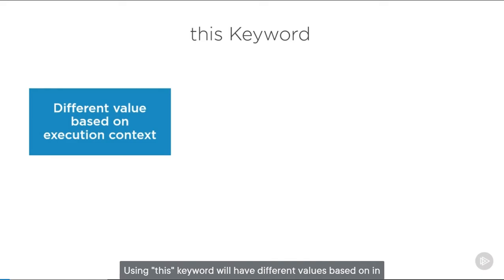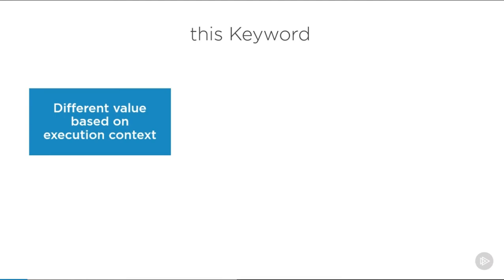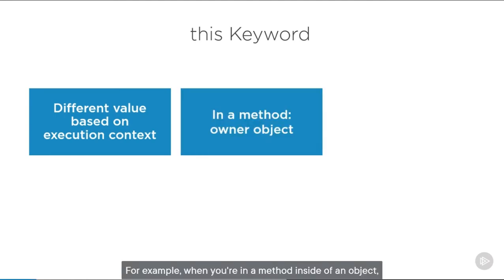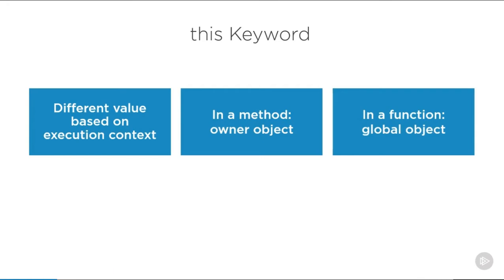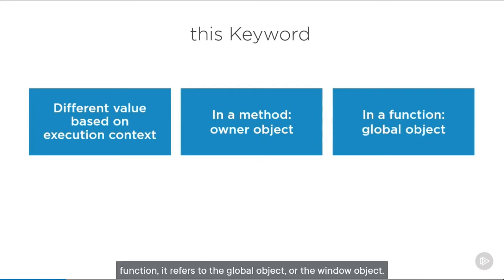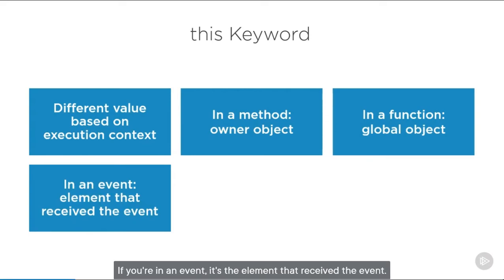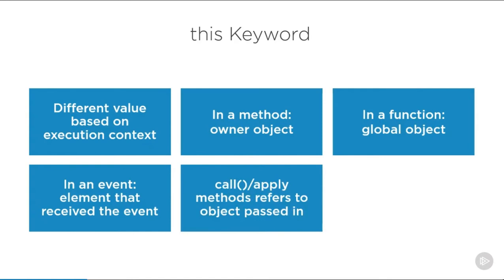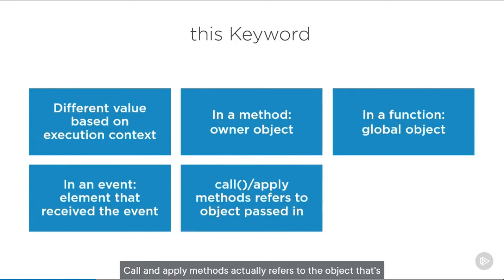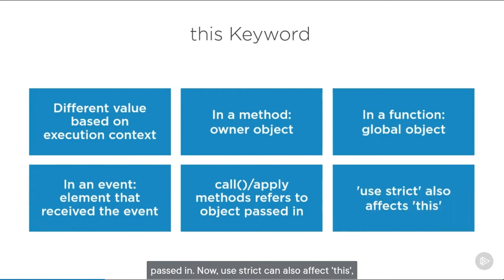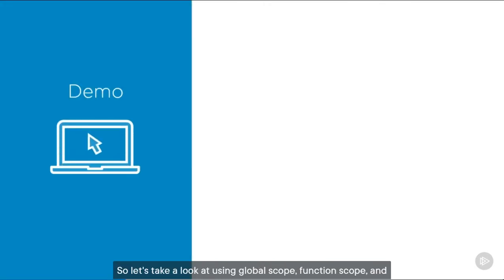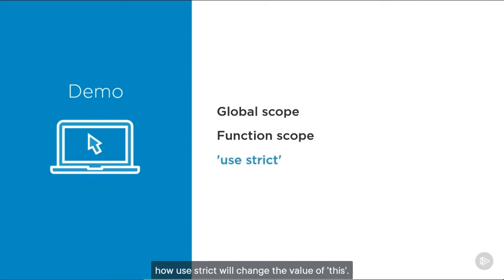Using the 'this' keyword will have different values based on the context in which your code is executing. In a method inside an object, 'this' refers to the owner object. In a function or outside any function, it refers to the global window object. In an event, it's the element that received the event. Call and apply methods refer to the object passed in. 'Use strict' can also affect 'this', as we'll see in the first demo covering global scope, function scope, and how 'use strict' changes the value of 'this'.